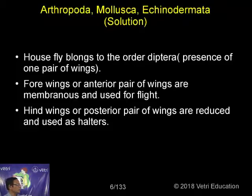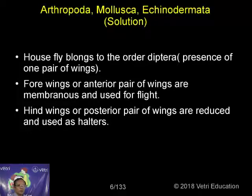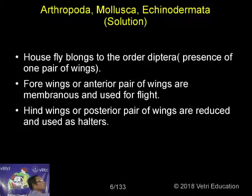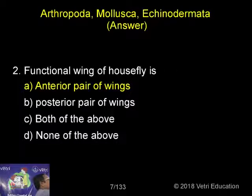Since only one pair of wings is present, the order of this animal group is called Diptera. Mosquito and Drosophila also belong to the same group, and that one pair of wings is the functional pair.